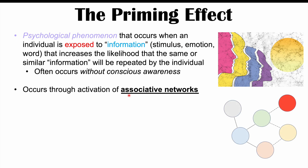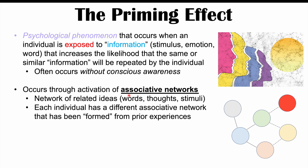Associative networks are networks of thoughts, words, or ideas that are connected to each other — a network of related ideas, words, thoughts, or certain stimuli. Each individual is going to have a different associative network that has been formed by their prior experiences. Depending on their prior experiences or education level, they'll have different connections between words, thoughts, or ideas. These associative networks are essentially networks of neurons in someone's brain. If someone is exposed to a certain word, it activates the neurons for that word, but also neurons connected in meaning to that word.